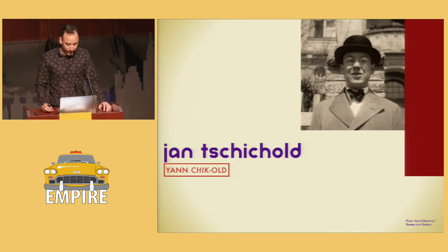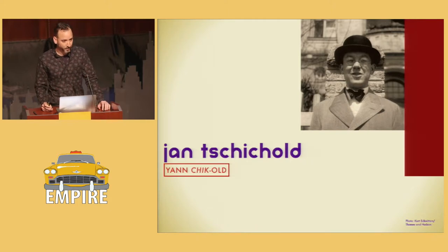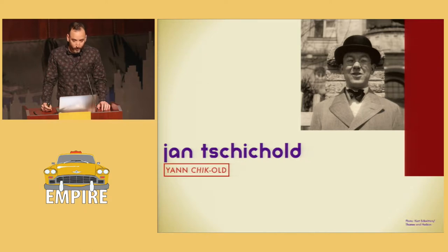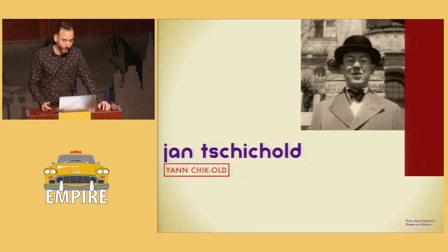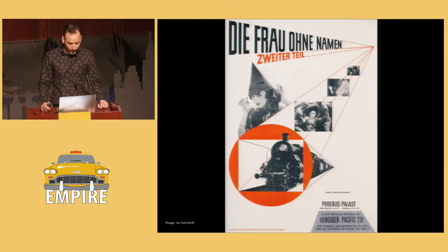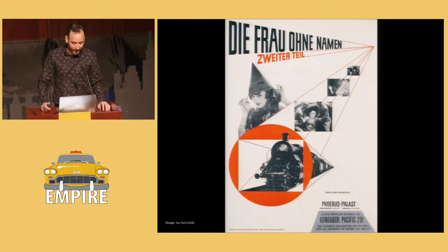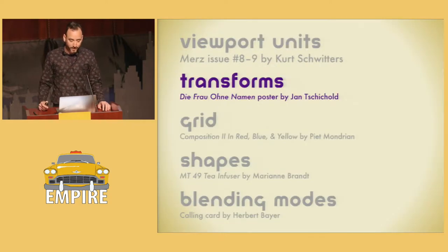Jan Tschichold is one of my personal favorites. He was a typographer who was so inspired by Bauhaus that he became one of the leading practitioners of modernist design. He would eventually go on to write the new typography, create layout systems for Penguin books, and design posters for Phoebus Palast, a movie theater in Berlin. So take a look at his movie poster for a German film called The Woman with No Name. Take a look at that title — it looks like it's zooming off into the distance. But we can replicate this to some degree using transforms.